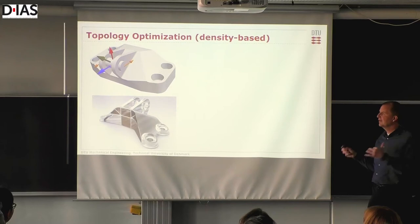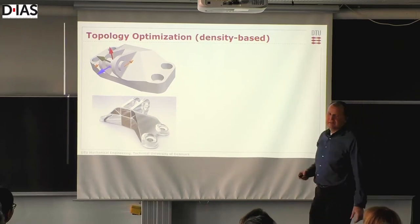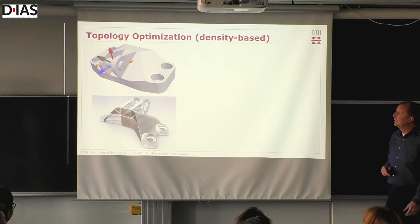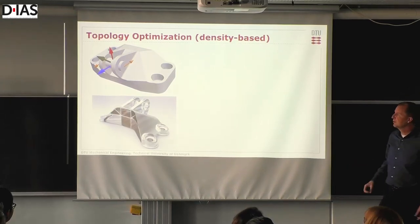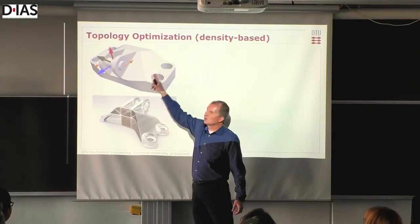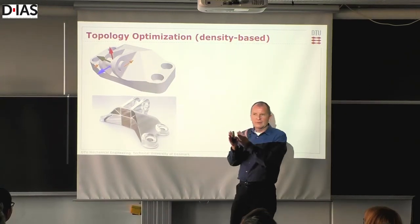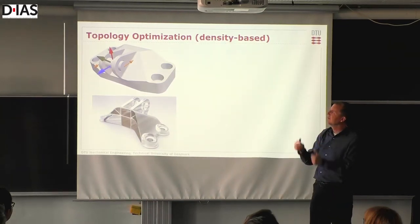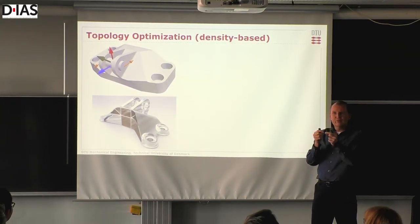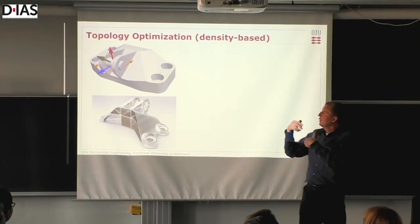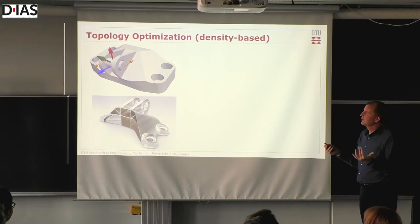You need something better — something not depending on predefined geometry, something that can distribute material in an optimal way. That's where this topology optimization method comes into play: we divide the design domain up into a lot of small voxels — pixels in 3D — and we want to find which of these voxels should have material and which not, in order to optimize the structure.